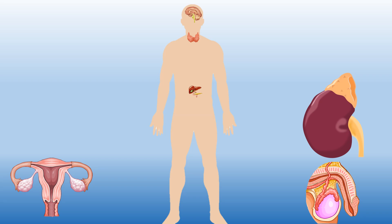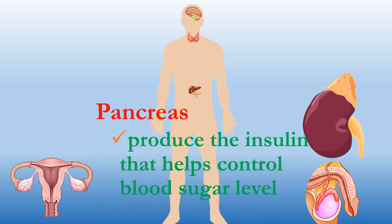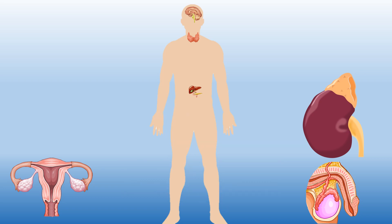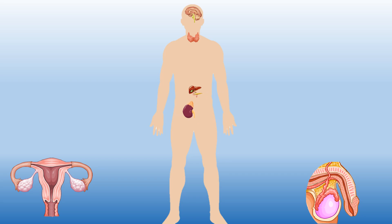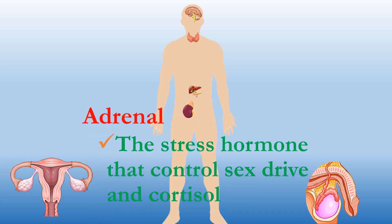Next we have the pancreas. Its role is to produce insulin, which helps to control the blood sugar level in our body. Next is the adrenal gland, which is called the stress hormone gland because it controls sex drive and cortisol.